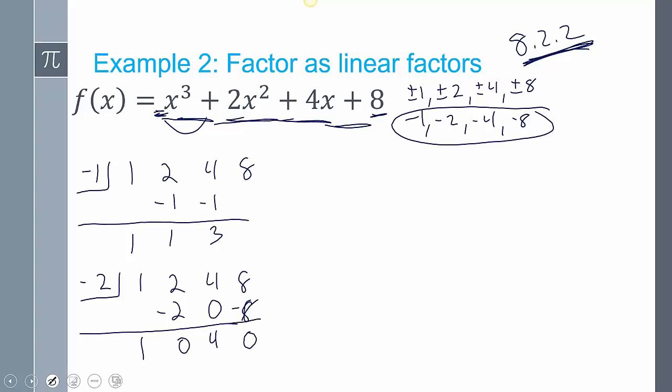It worked. So I have x minus my zero, minus negative 2, which is plus. And now I have x squared, so this is remainder, constant x, x squared, plus 4. Setting this x squared plus 4 equal to 0, or you can use the quadratic formula, minus 4 on both sides, x squared equals negative 4, square rooting, you get x equals plus or minus 2i.